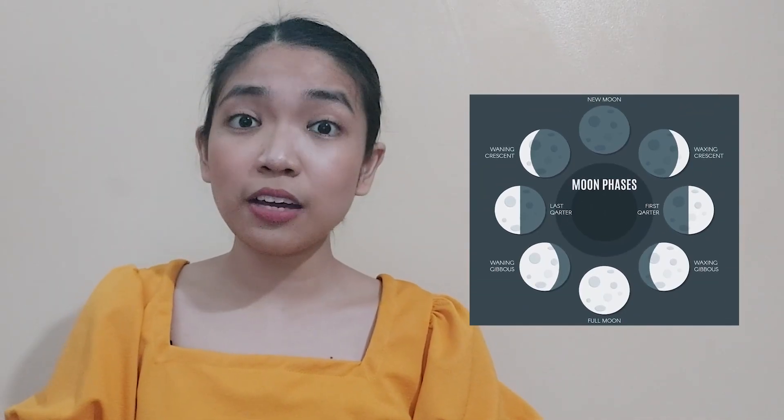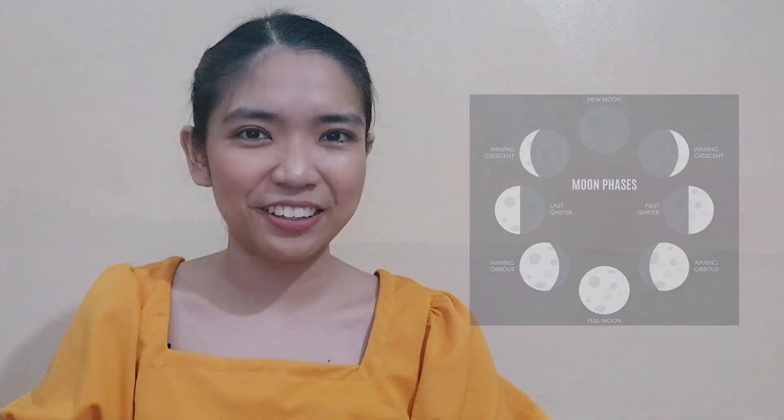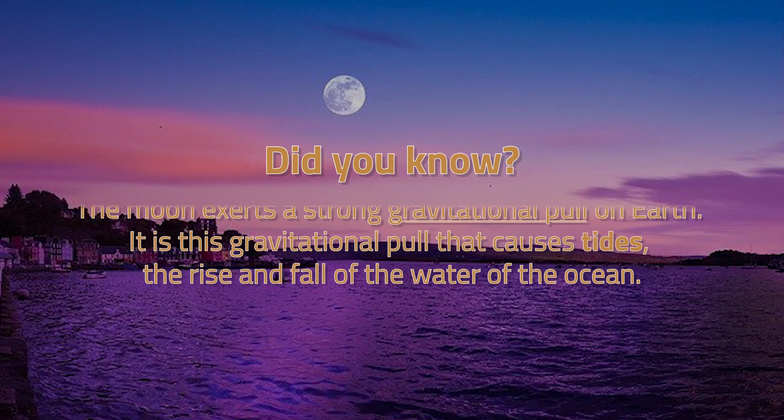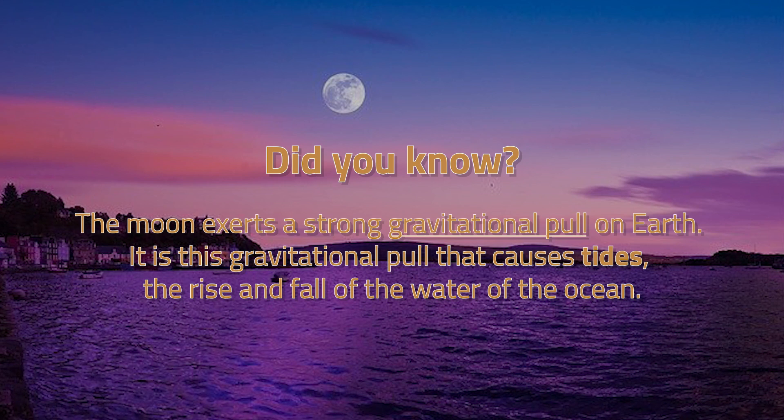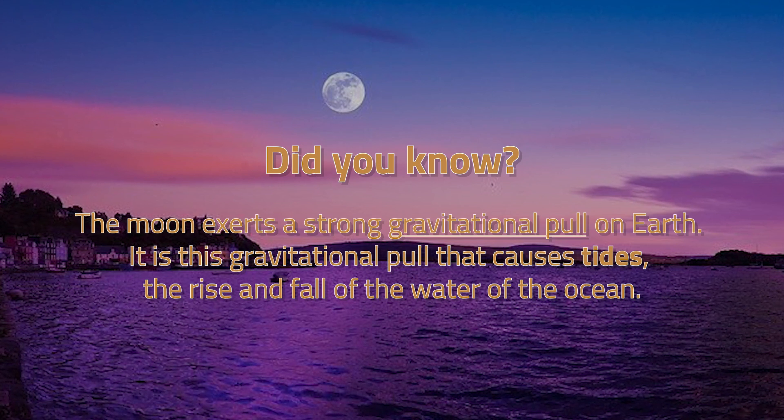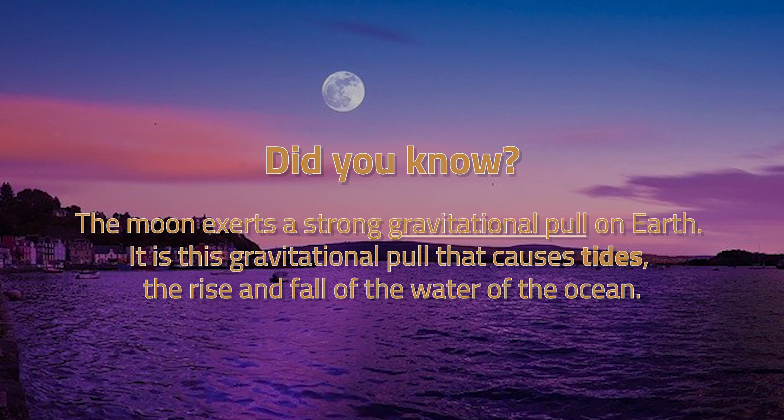Now that we know the different faces of the moon, let us now study the moon's impact to our planet Earth. Did you know that the moon exerts a strong gravitational pull on Earth? Yes, it truly does. It is this gravitational pull that causes tides, the rise and fall of the water of the ocean. Usually, fishermen and ship captains schedule their activities based on these tides. Low tides can damage boats and ships. That is why fishermen and ship captains take their boats and ships in and out to the sea during high tides when the water level is rising.